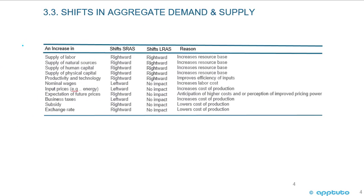Now we're going to look at some shifts in the short-run aggregate supply curve and also the long-run aggregate supply curve. An increase in the supply of labor is a rightward shift to both curves — an increase in the resource base. Increase in supply of natural resources, human capital, and physical capital are all rightward shifts to both curves for the same reasons. Increase in productivity and technology has the same impact. This is mostly common sense.